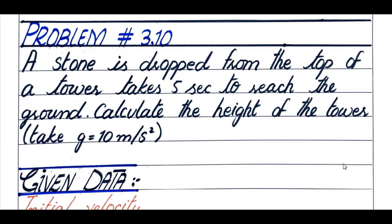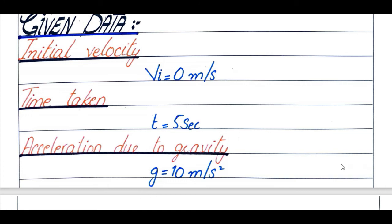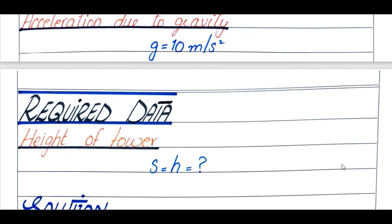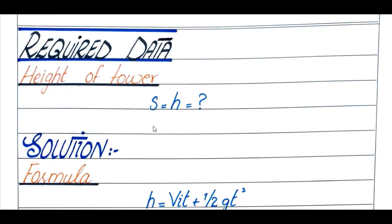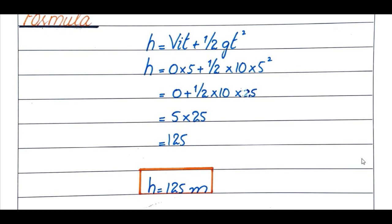Problem number 3.10: A stone is dropped from the top of a tower and takes 5 seconds to reach the ground. Calculate the height of the tower. Initial velocity is 0, time is 5 seconds, acceleration due to gravity is 10 m/s². Using h = vi·t + ½g·t², substituting values gives the height of the tower as 125 meters.